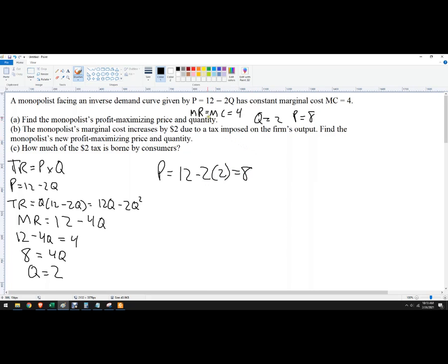Now the monopolist's cost increases by $2 due to a tax imposed on the firm's output. This is called an excise tax. It's collected by the firm but ultimately paid for by the consumer. So instead of marginal cost being 4, we're going to add that $2 tax. So now effectively the marginal cost is 6.